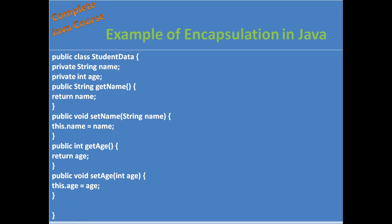For one property we define two methods: a setter method and a getter method. For example, get name returns the name, and set name accepts and assigns the name value. In the same way we define setter and getter for age. So for every property we define two methods — setter and getter.